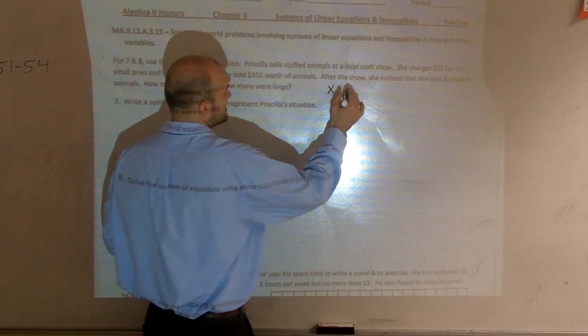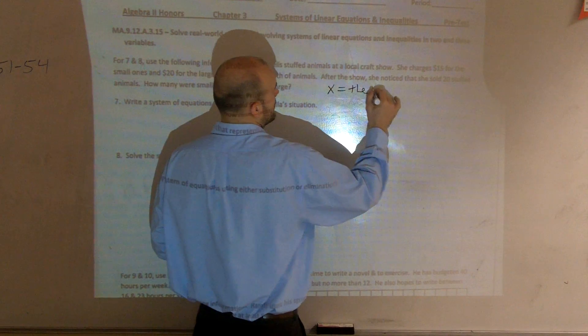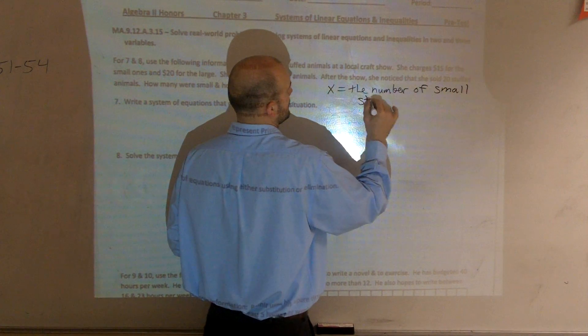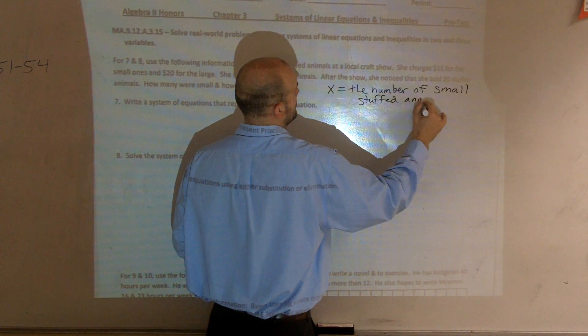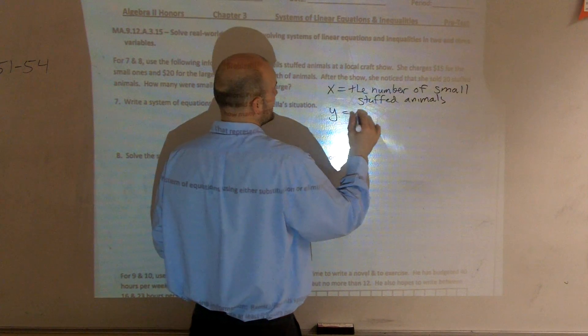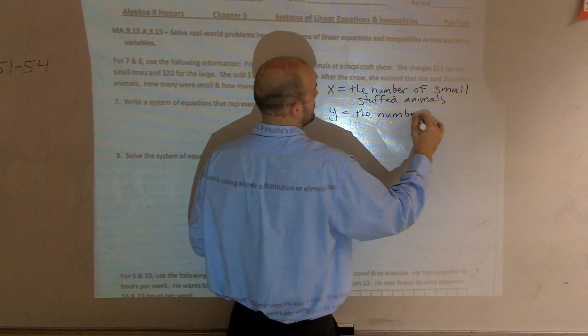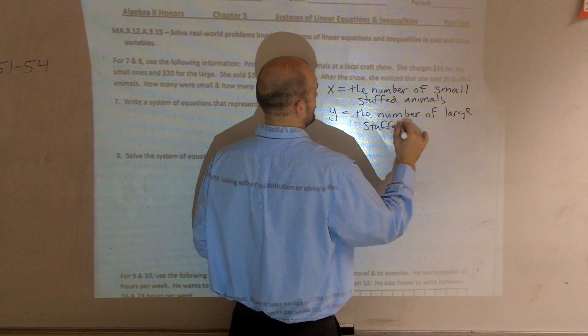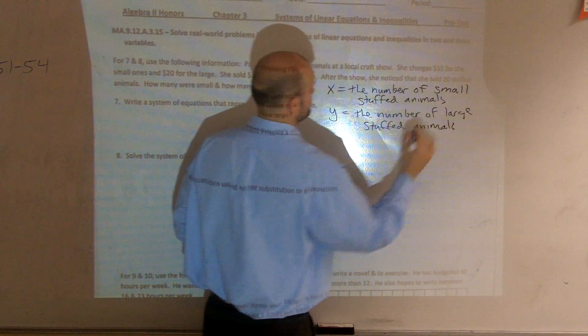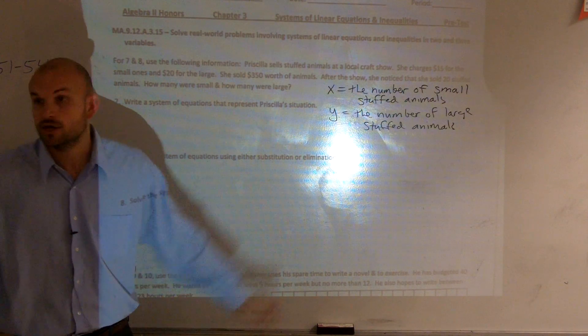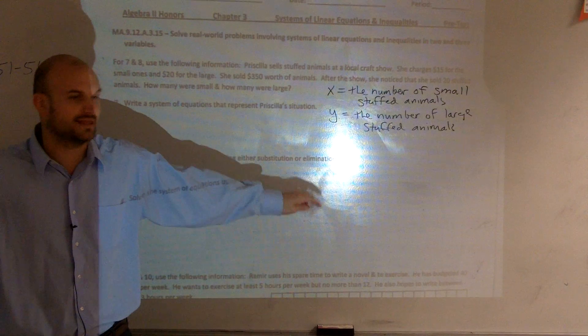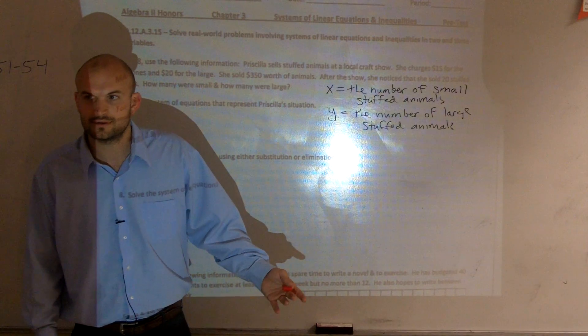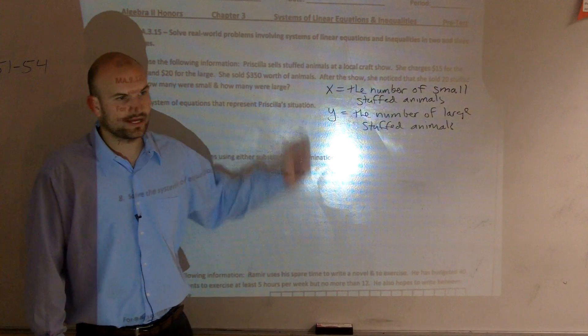So, let's set up a variable for each one. I'm just going to say, let's have x equal the number of small stuffed animals and y equals the number of large stuffed animals. You do not need to know how to do any kind of systems of elimination, graphing, all that kind of thing. All you guys need to do is just determine what is the question asking and then what are your variables that you can set up.